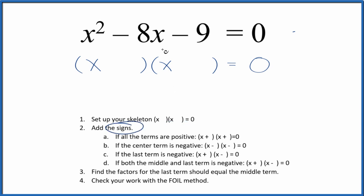Then we want to look at the signs. So we have a negative and a negative. If the middle term and the last term is negative, we're going to put a positive and negative in our skeleton equation, like this here.